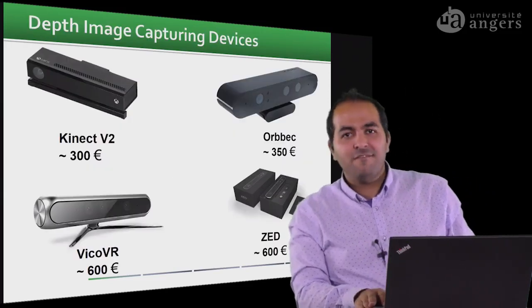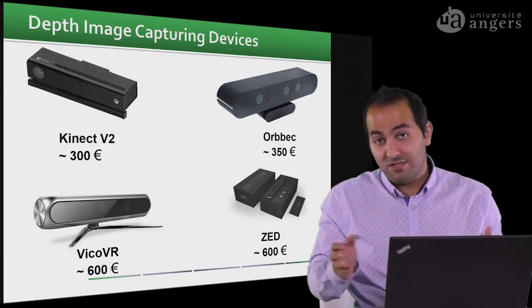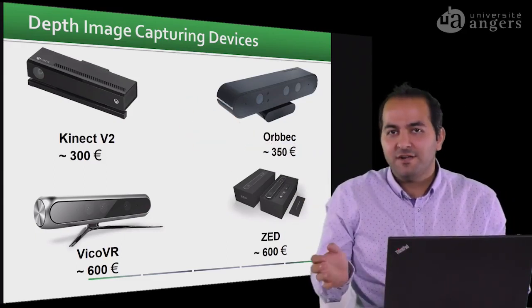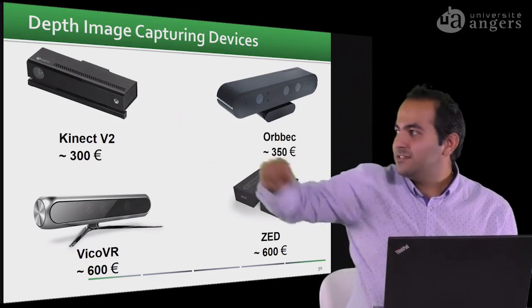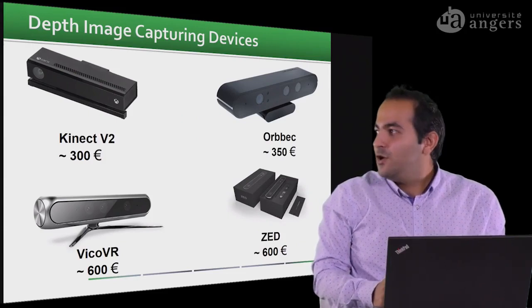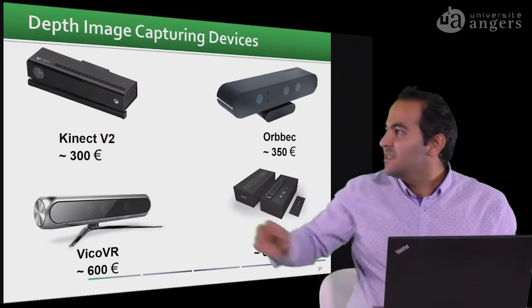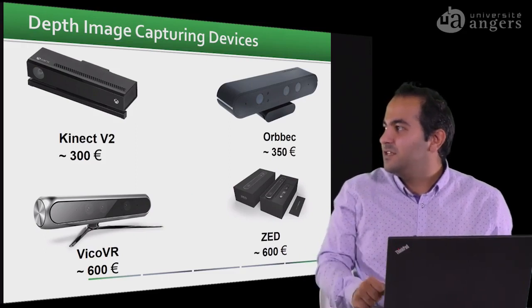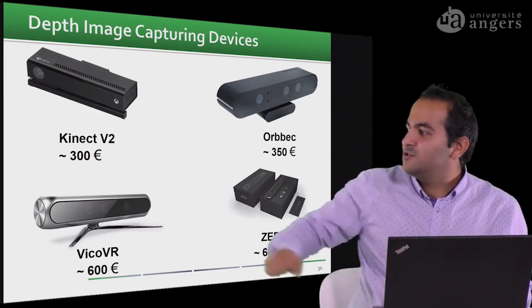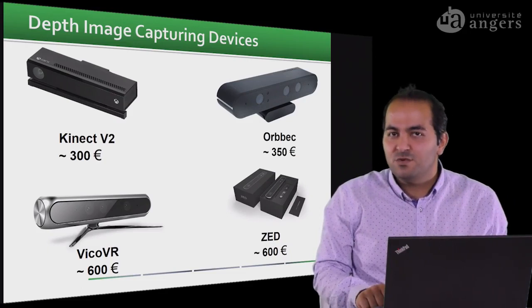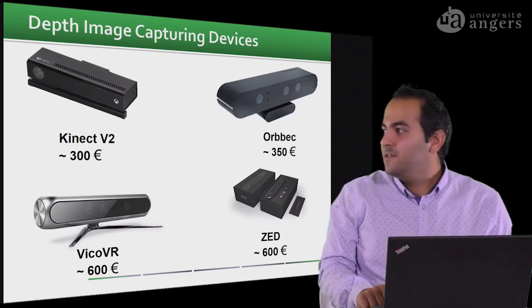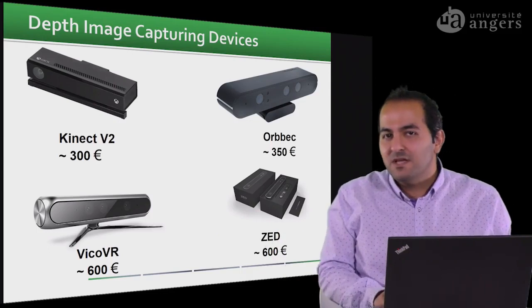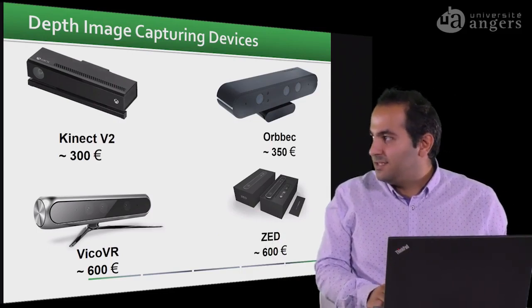Some available low-cost depth cameras on the market are the Kinect version 2 — if you are a video game lover, you know it's produced for the Xbox console — and the price is around 300 Euros. You can use another depth camera called Orbec, which is almost the same price, around 350 Euros. Another option is the Vico VR, mostly used for virtual reality projects, around 600 Euros. And also the last one is the Zed camera, also an option for getting depth images.